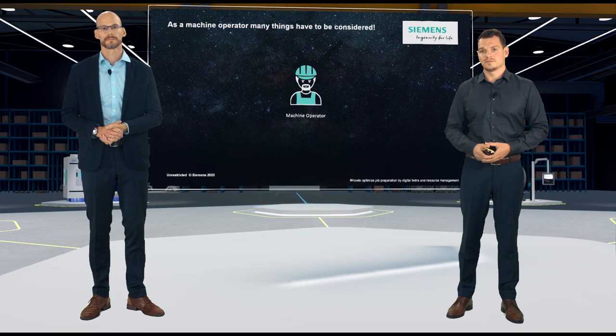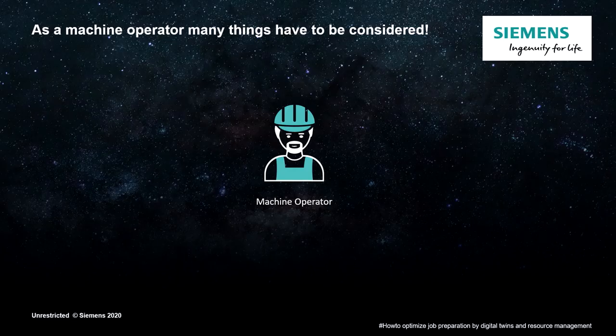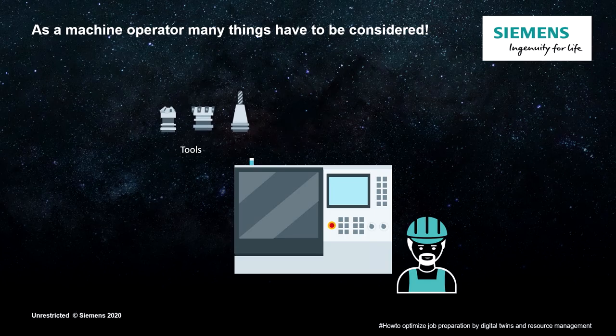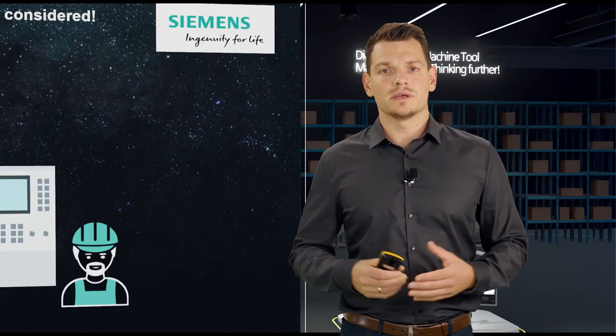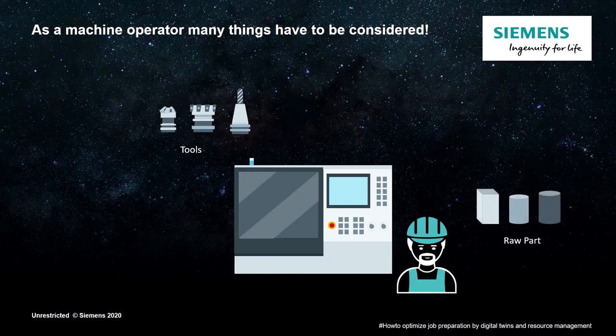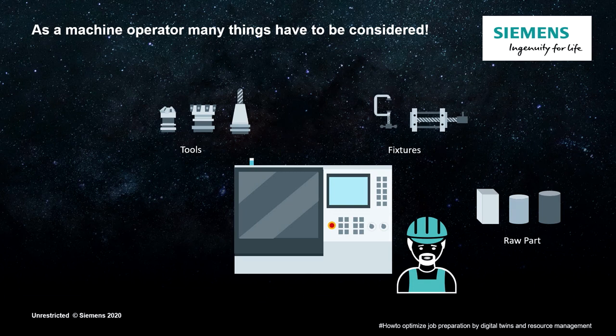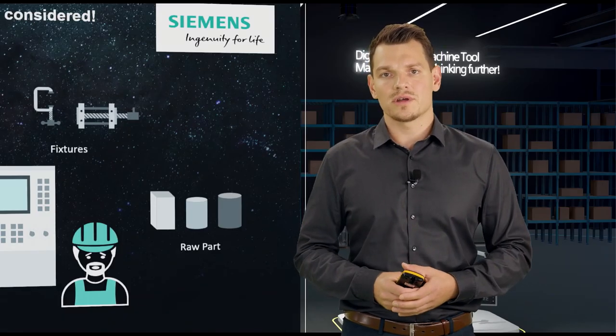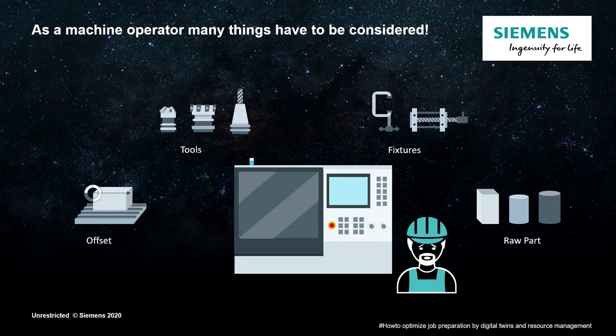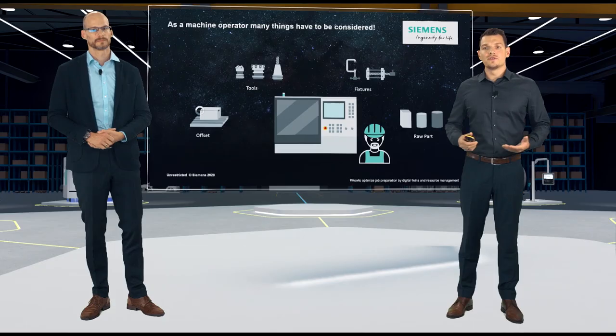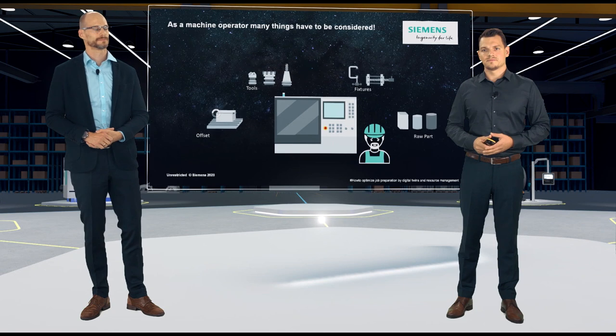Next, we take a look at the machine operator. Usually, a machine operator has to take many things into account during running in and production. Among them are tools like diameter, tool holder, loading into the machine, etc. The clamping devices have also been taken into consideration, like type, size, fixing and others. The raw parts must also fit the clamping situation and, of course, have the correct oversize. And things like an offset are also important, so that the machine knows where the workpiece is located in the workspace. So, you have to think of quite a few things.